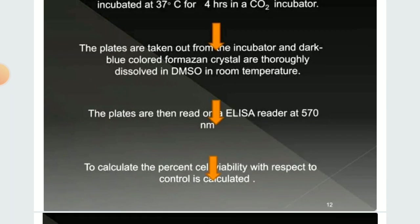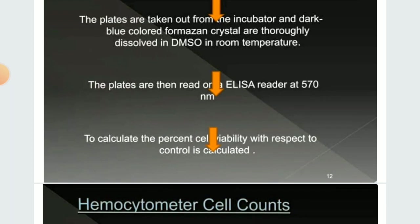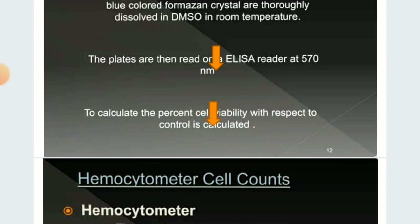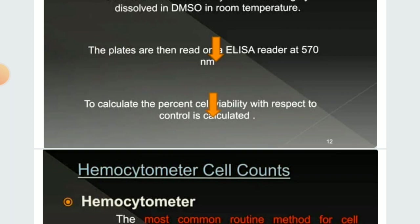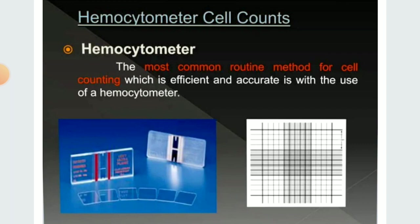The plates are taken out from the incubator and the dark blue-colored formazan crystals are thoroughly dissolved in DMSO at room temperature. The plates are then read on an ELISA reader at 570 nanometers to calculate the percent cell viability with respect to the control. A hemocytometer is the instrument used for cell counting — it is the most common, efficient, and accurate routine method for counting cells.